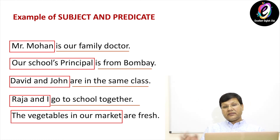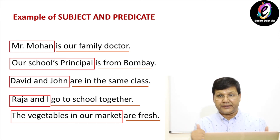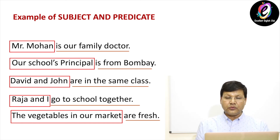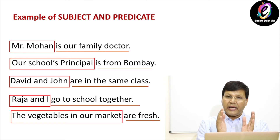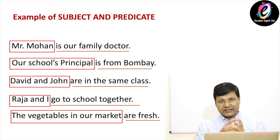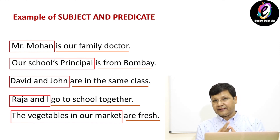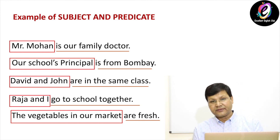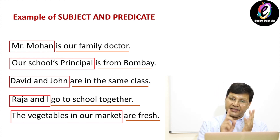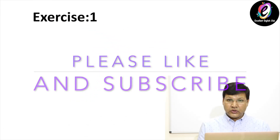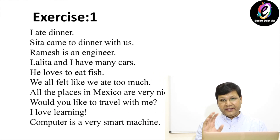Look here: 'The vegetables in our market are fresh.' So this is subject and predicate. Now you can easily understand what is subject and what is predicate. In this video I told you parts of speech — there are eight parts of speech and number nine is article: noun, pronoun, verb, adverb, adjective, preposition, conjunction, and interjection. After that I told you there are two parts of a sentence: one is subject, which means any noun; and predicate, which is the rest of the part after the subject. Now I will give you one exercise — you will have to underline the subject and circle the predicate in the given sentences.